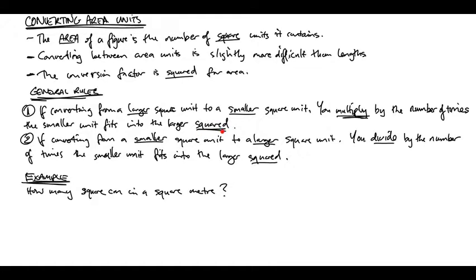But you square it this time. So you know that a meter contains a hundred centimeters, and so you keep that in your head. But this time you square that number. So a hundred times a hundred is actually ten thousand. So you are going to be multiplying by ten thousand if you're converting from a square meter to square centimeters.